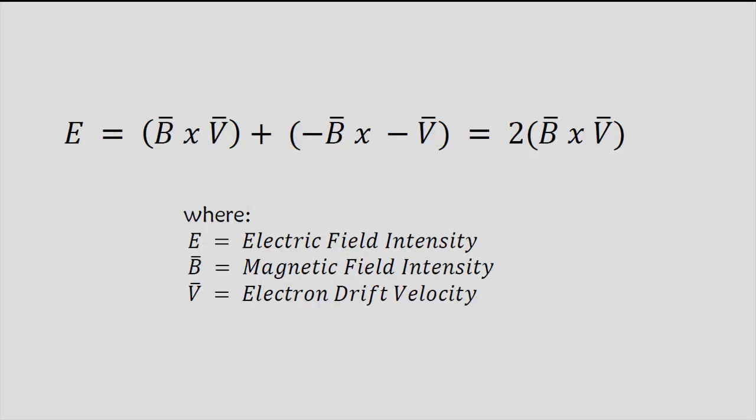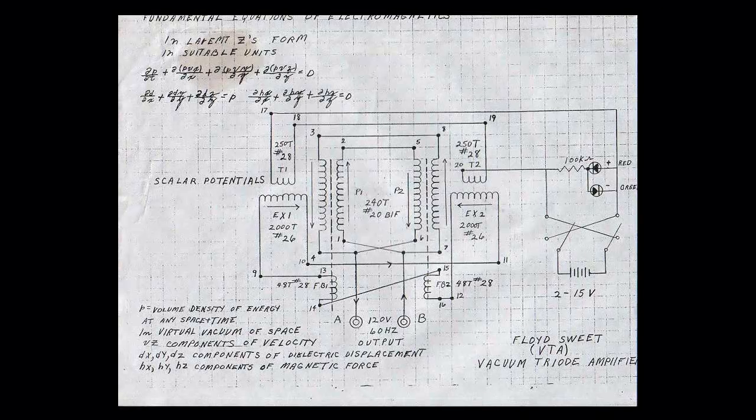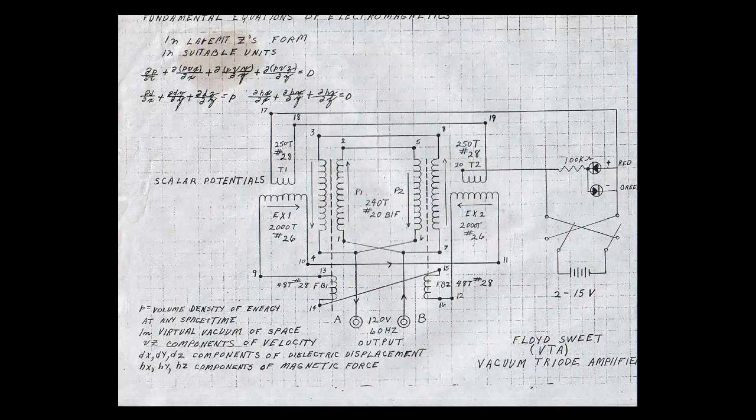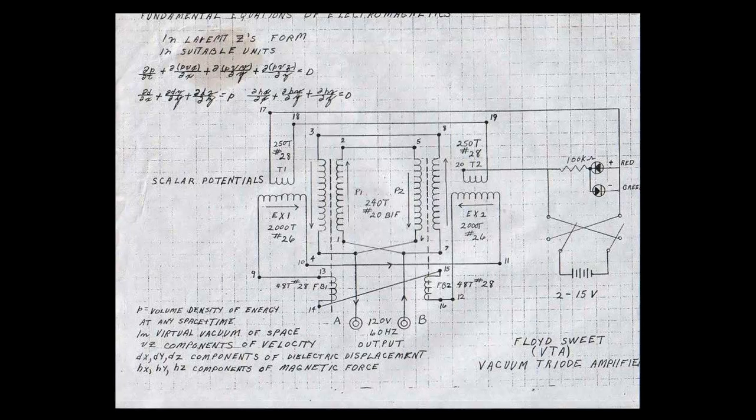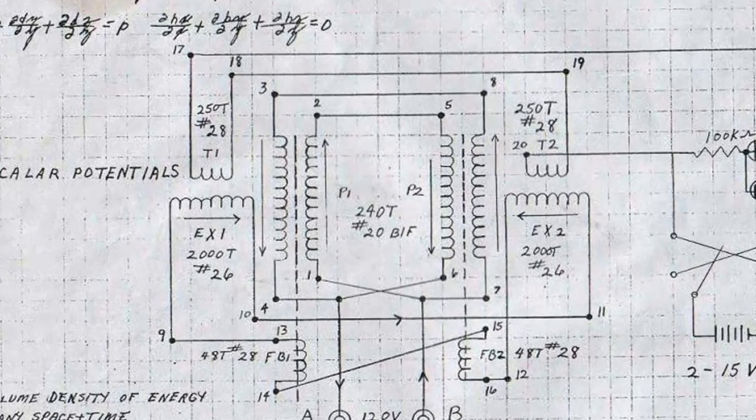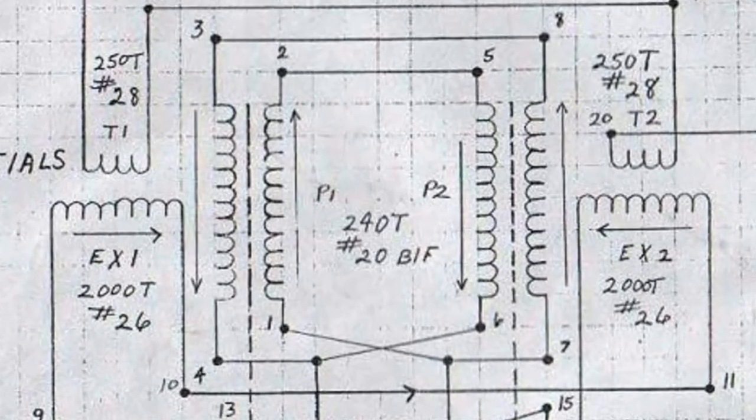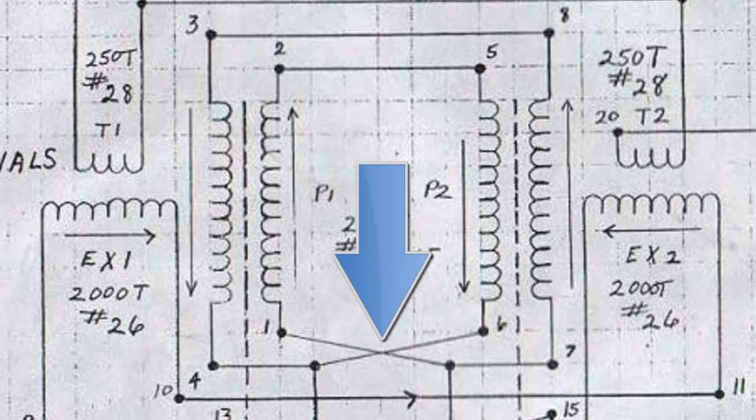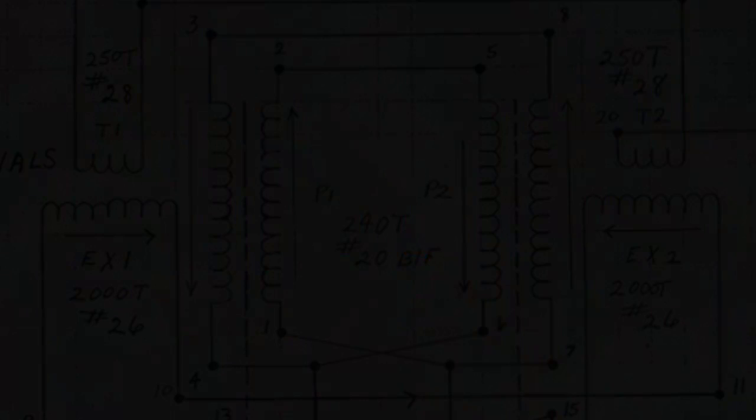Floyd Sweet also describes this in the Nothing is Something paper in his equations. E equals B times V plus negative B times negative V which equals 2B times V. This simply means that, because of the direction of each of the turns and the way it's connected, each set of coils has electrons moving in different directions and the end result is, that we have to cross connect the output terminals to correct the negative sign. For example, get the AC phasing correct.